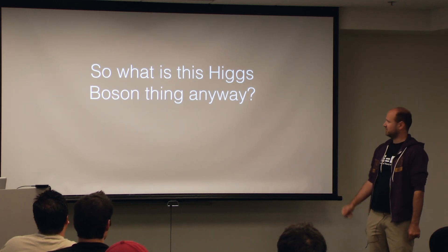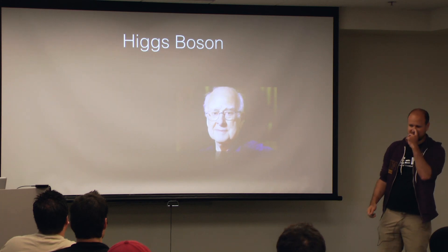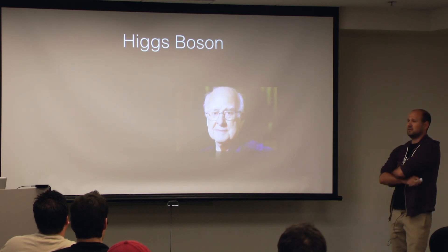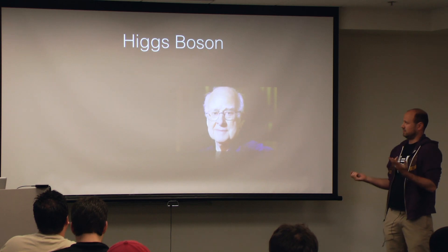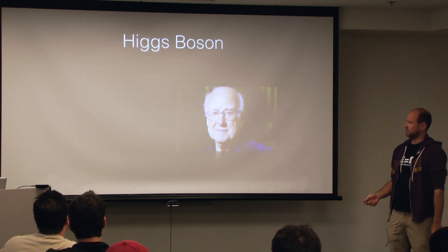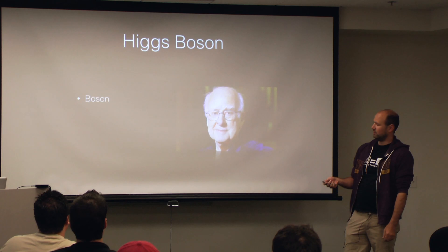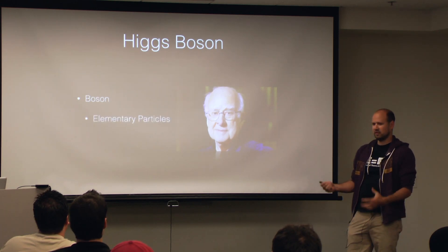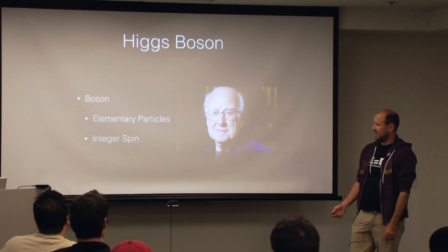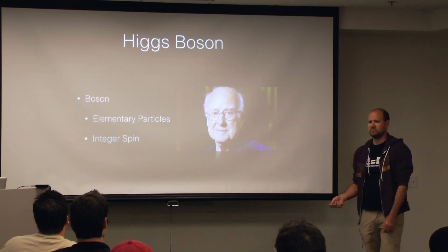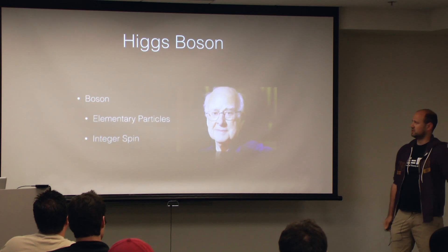So we've got the Higgs boson. The obvious thing is this is Peter Higgs. He kind of developed the theory around it in 1967, and then we just confirmed it last year. Basically, quick things you need to know about bosons is that they're elementary particles, they're subatomic particles, and they have integer spin — which means zero, one, two, three, four. And this will actually come into importance later.